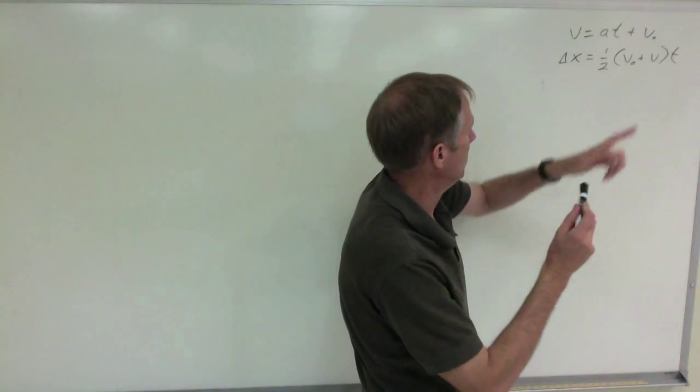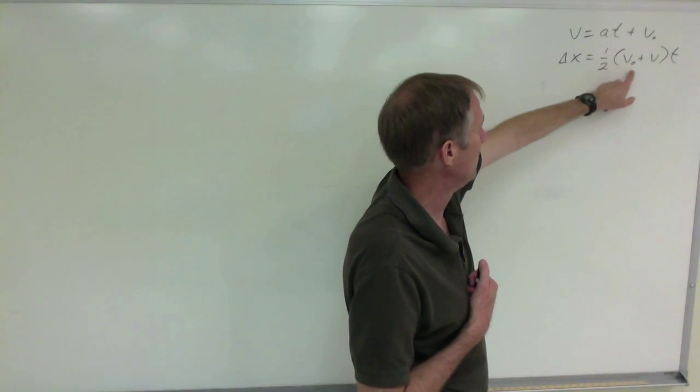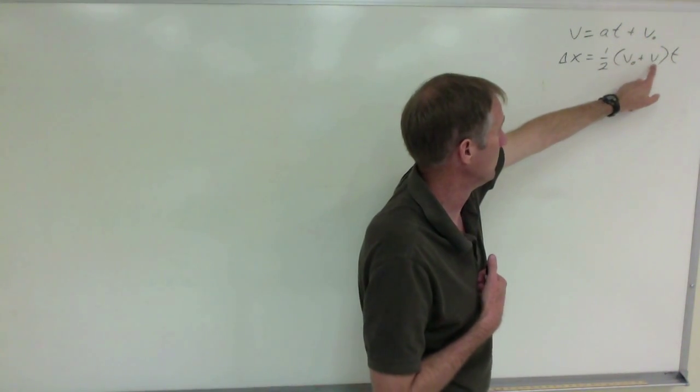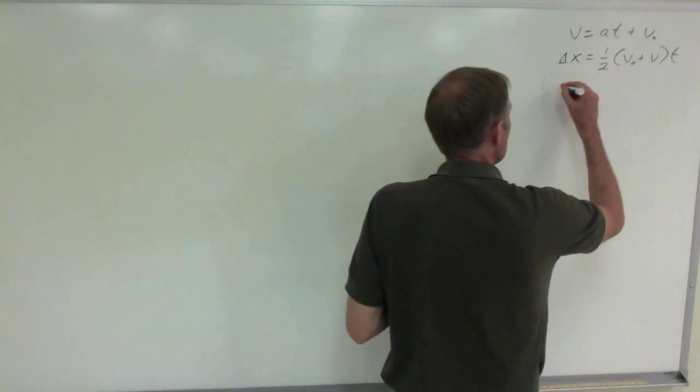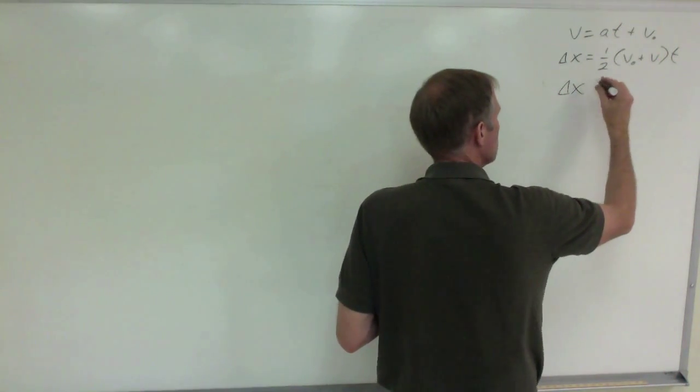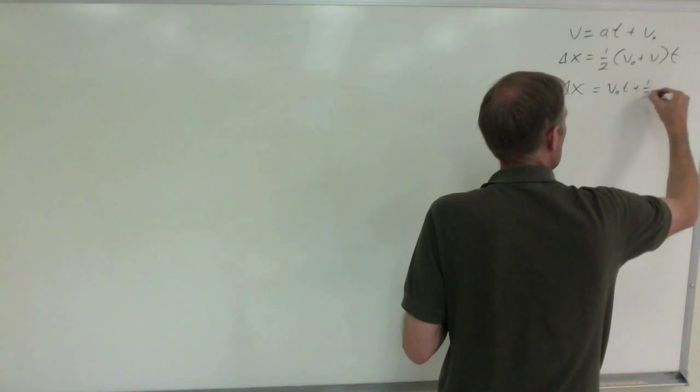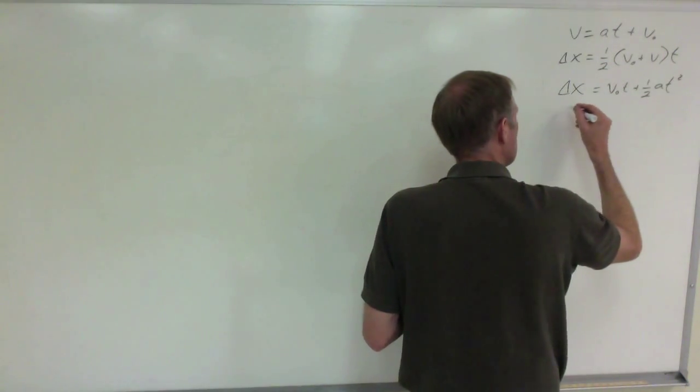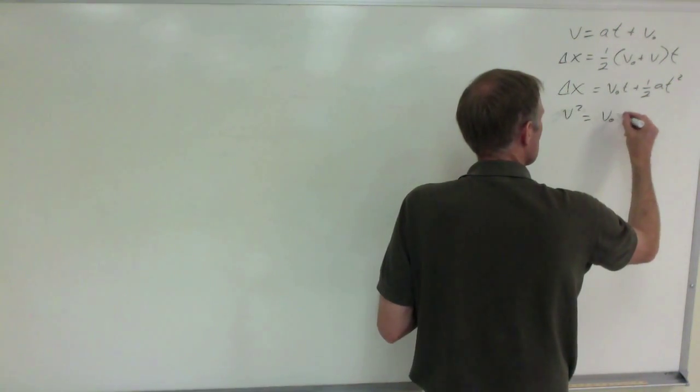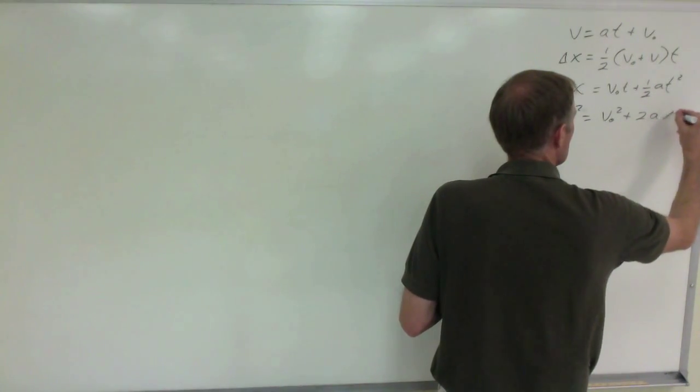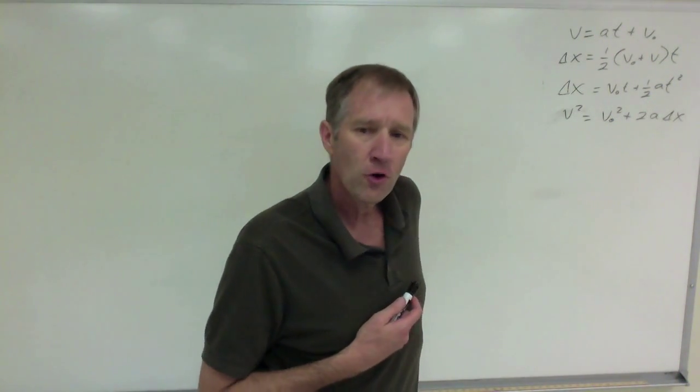This V sub zero is the velocity at zero seconds. That's how you read that. Some textbooks you'll see that as V sub i for initial velocity. Sometimes that's just V, sometimes that's V sub f for final velocity. There's no standard there. Another equation that has its uses is displacement, changing position delta x, equals initial velocity times time plus one-half at squared.